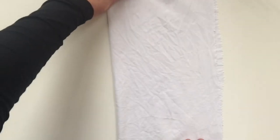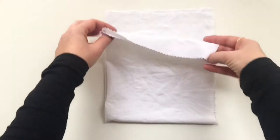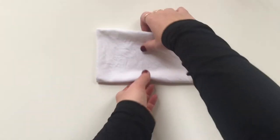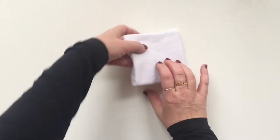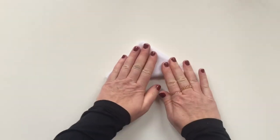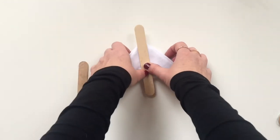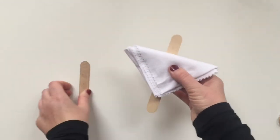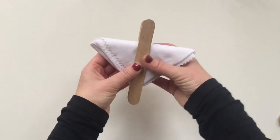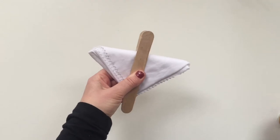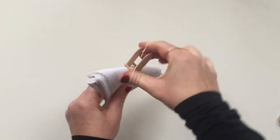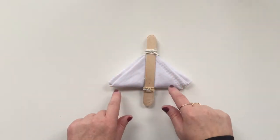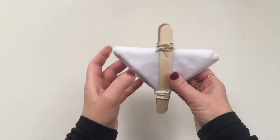For this first one we're going to fold it in half, fold it in half again, and again, and again. Then I'm going to pop it into a triangle with your lollipop sticks. I'm going to put one on one side and directly behind it I'm going to put the other one, and I'm going to fix those with an elastic band so that they don't move when we put them in the dye bath.